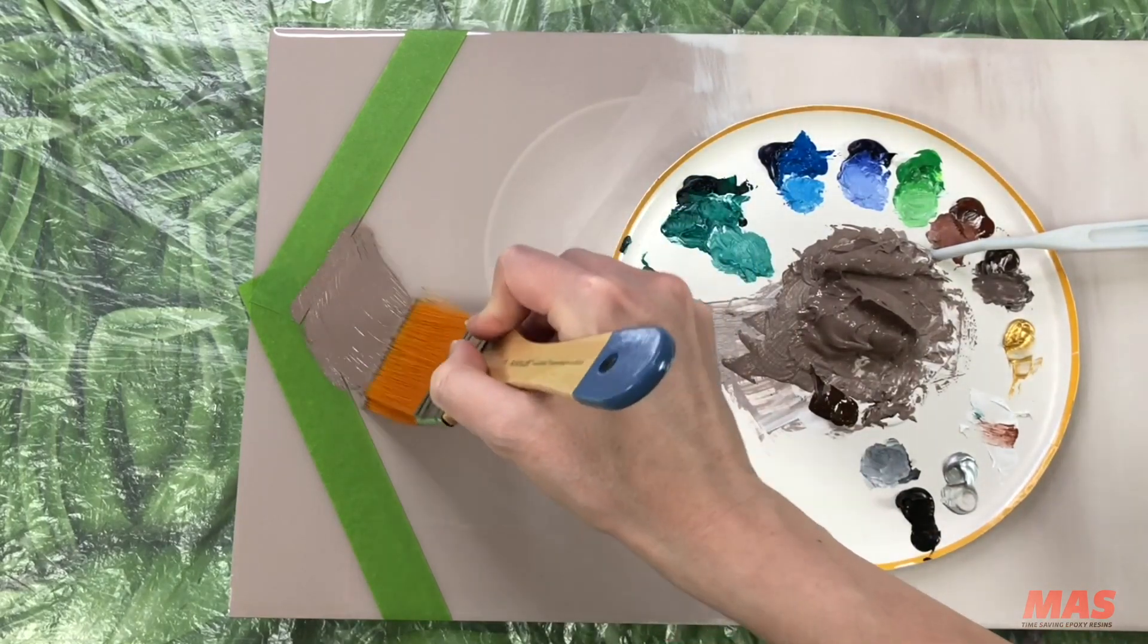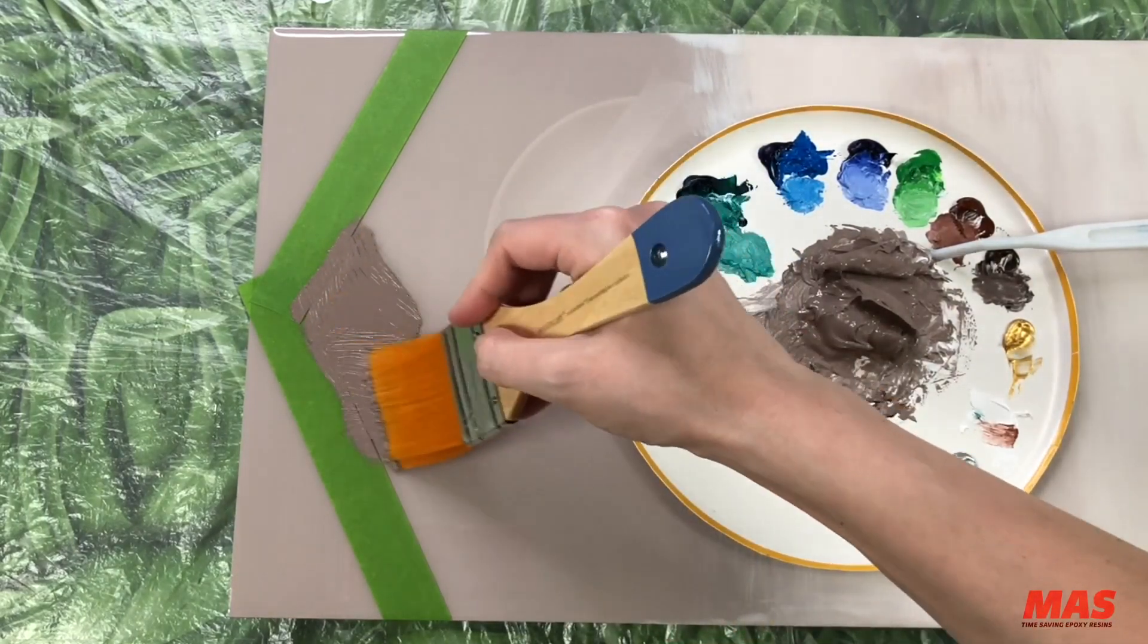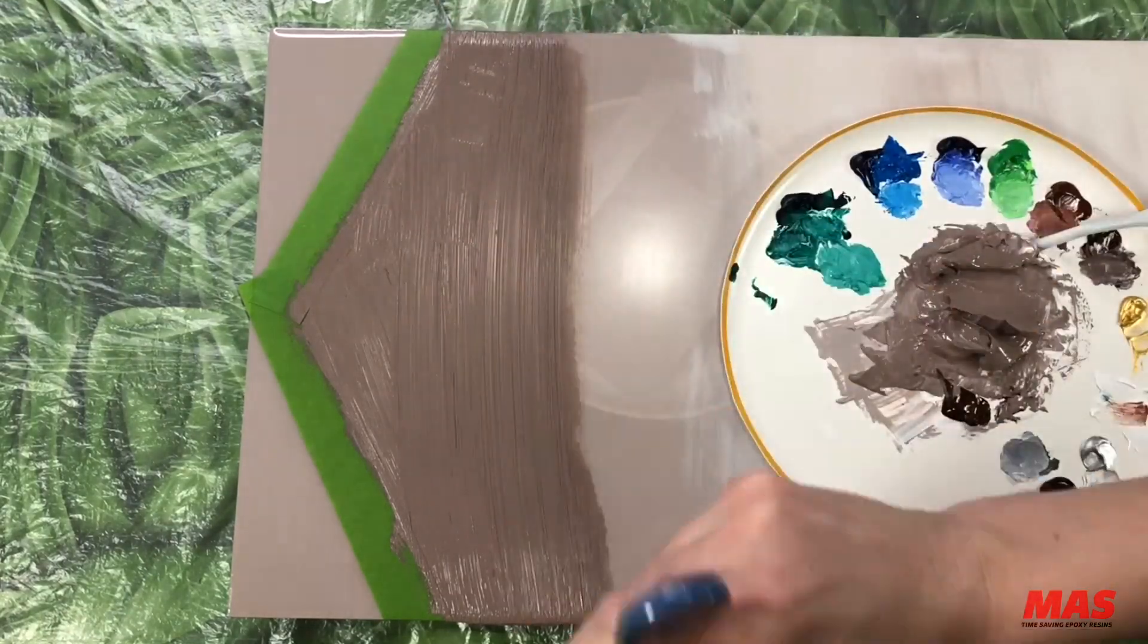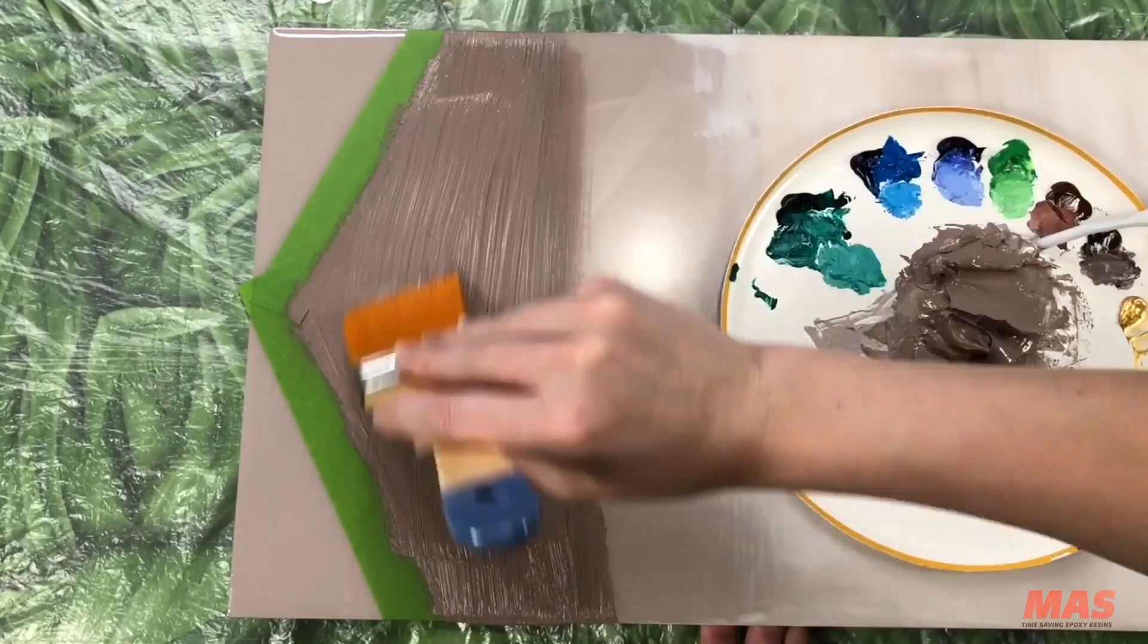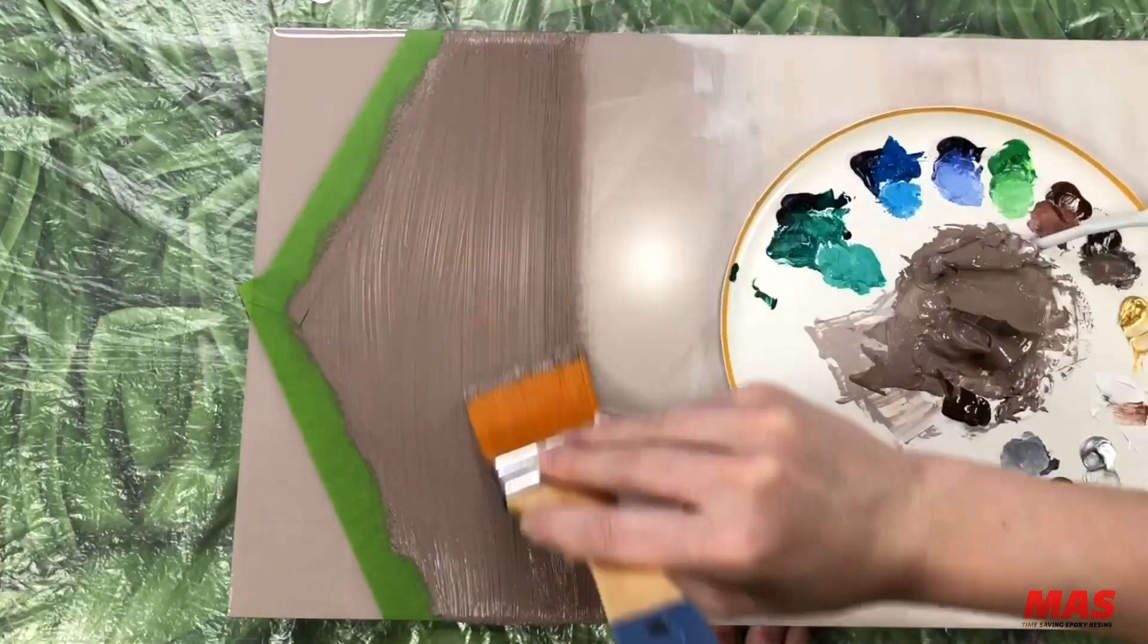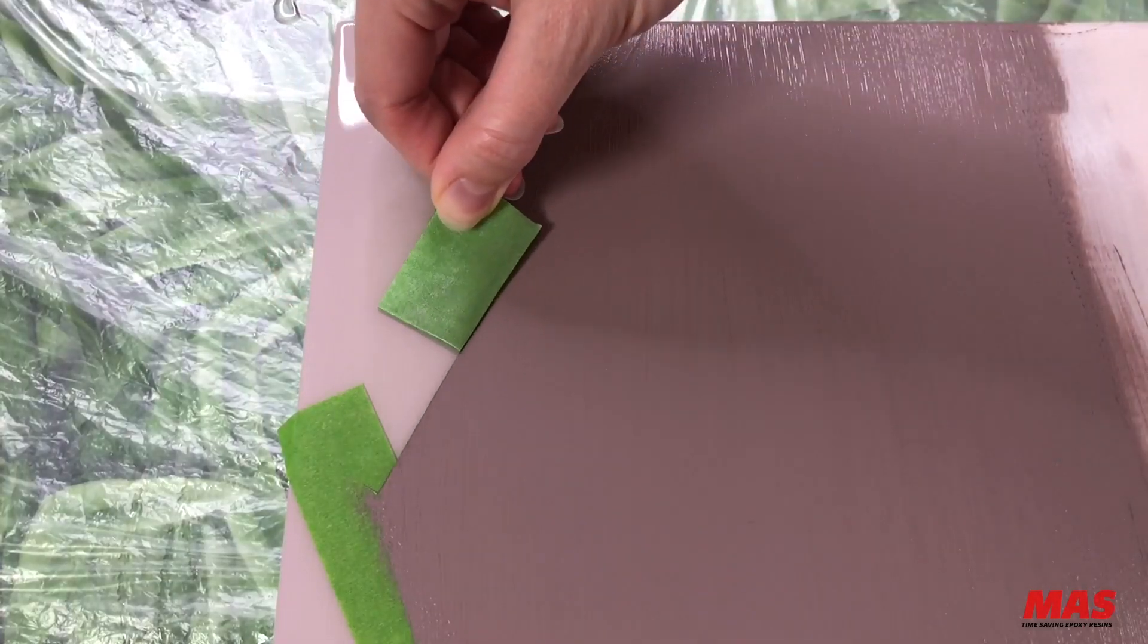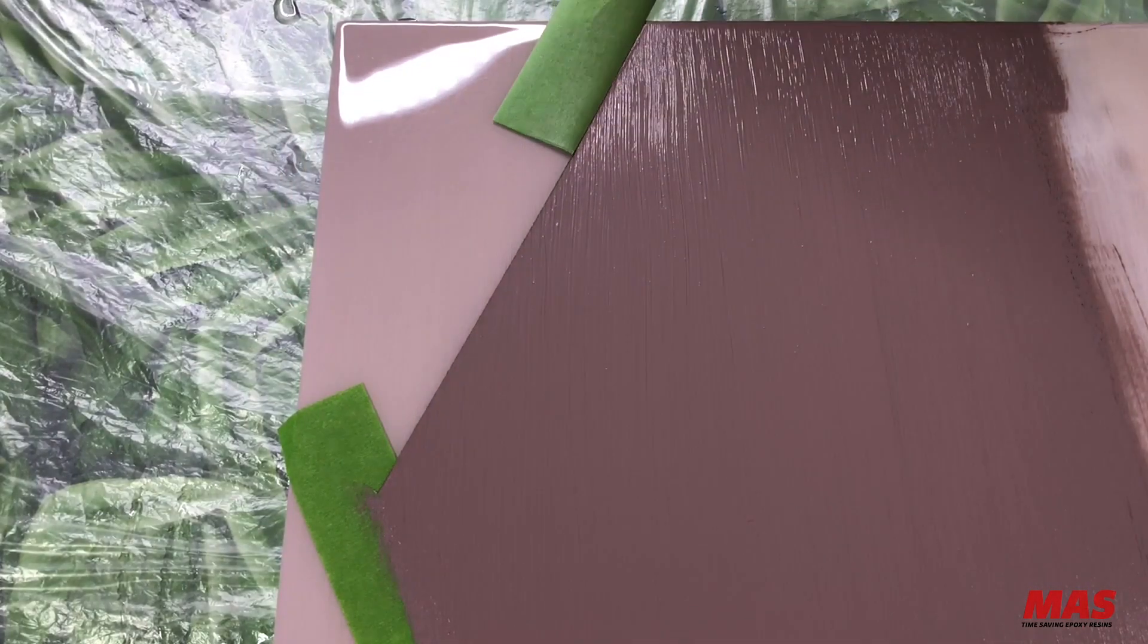Alrighty let's start painting. So for this chevron I used a darker brown and a large brush to fill in that whole entire area. Once I did about one to two coats I removed the tape while the paint was still wet.